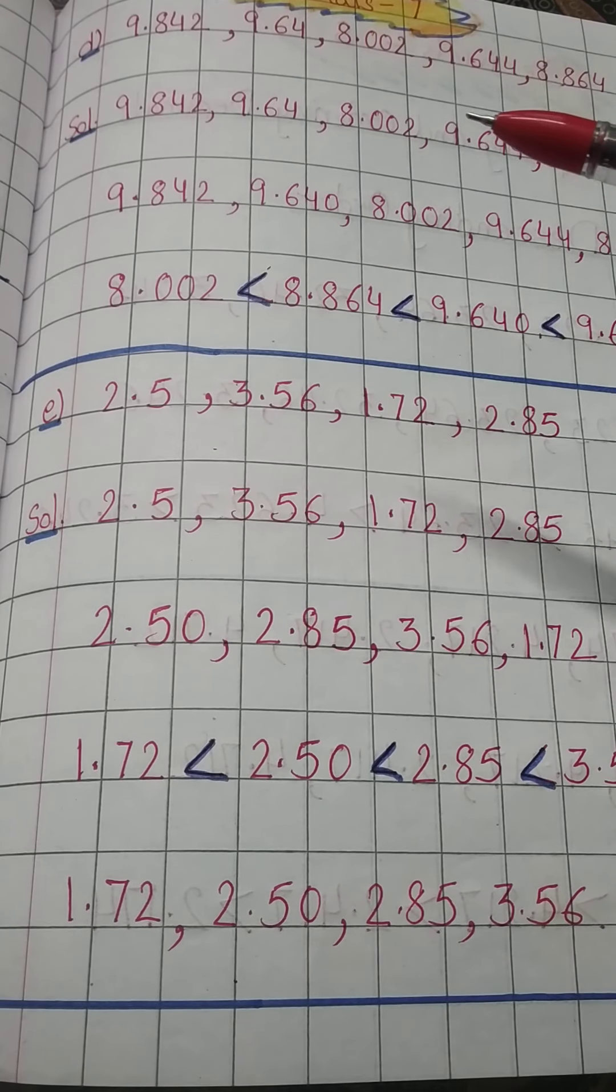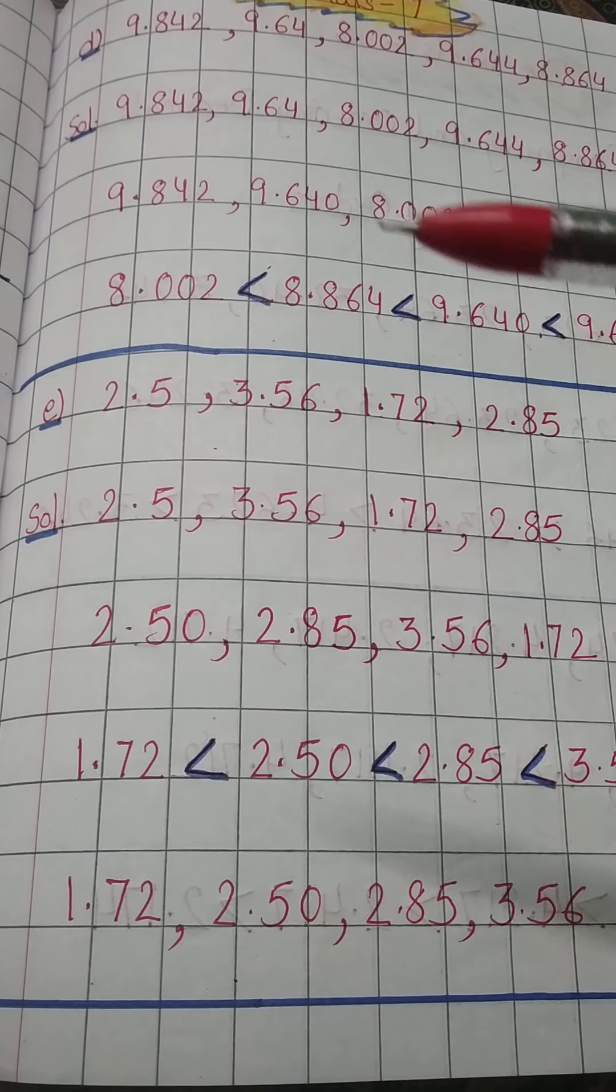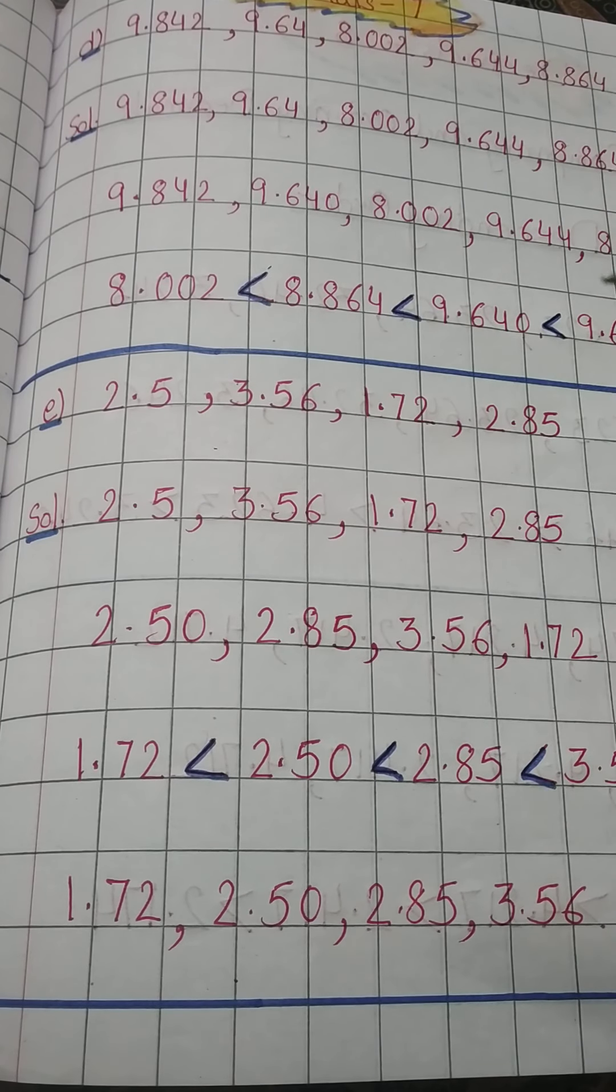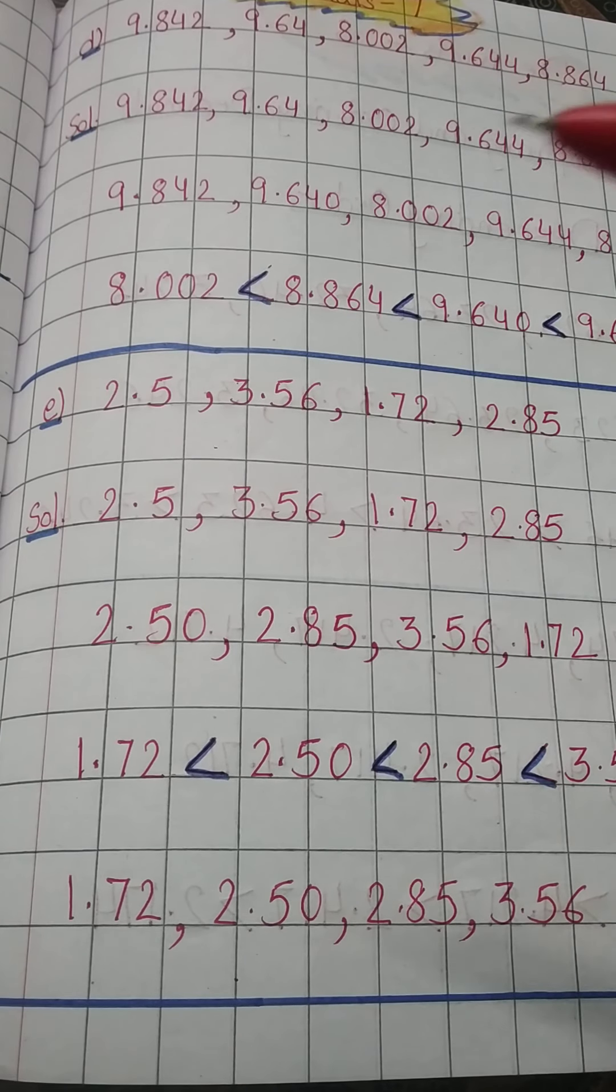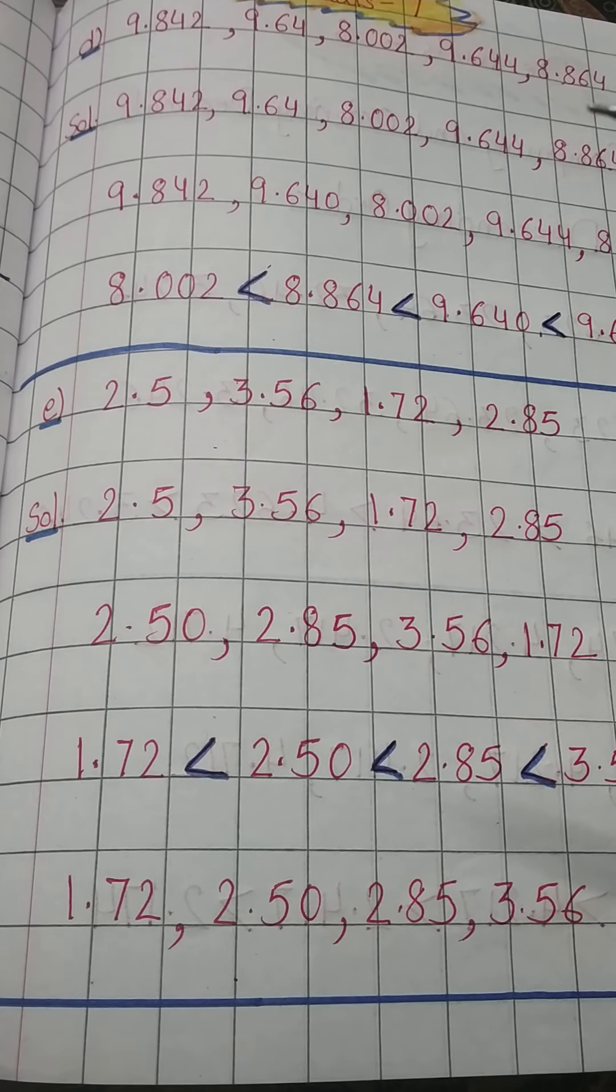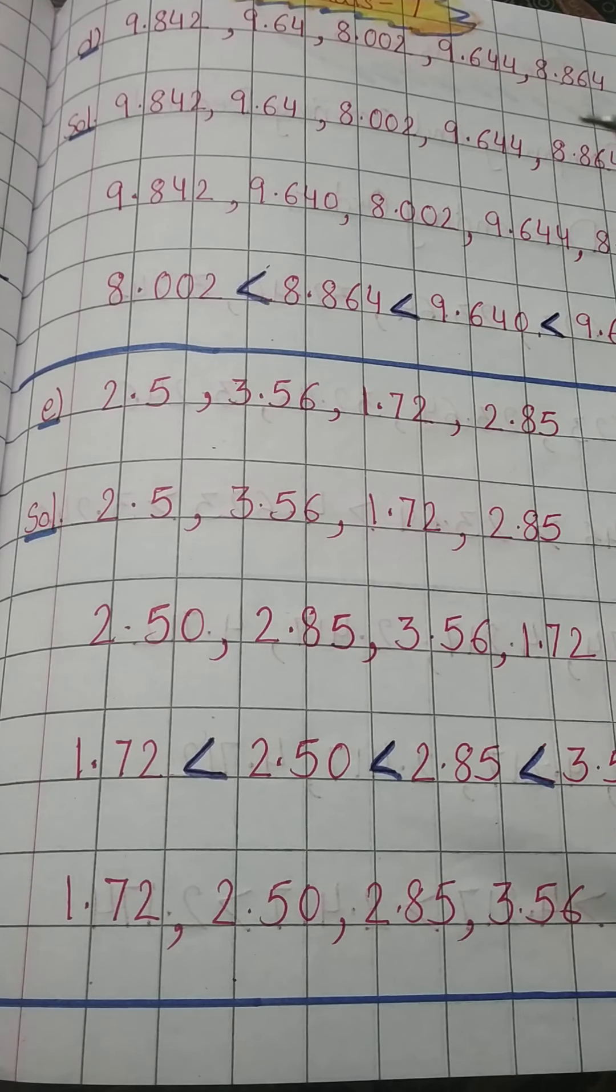First we will check the numbers, read and think in your mind and arrange them in order. So we will go for 8. Here two eights are there: 8.002 and 8.864. So that means 8.002 is lesser.